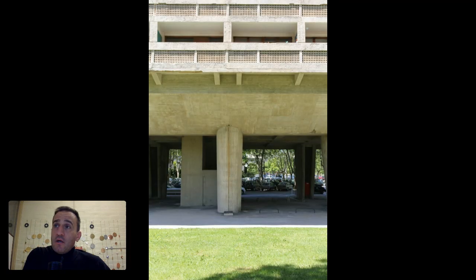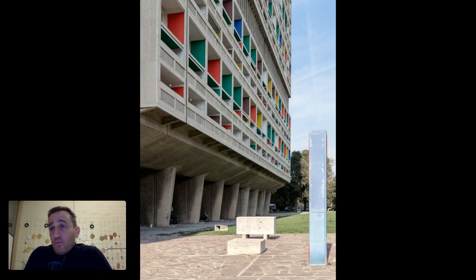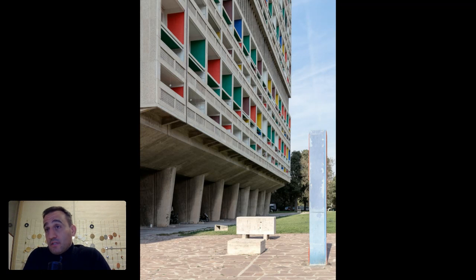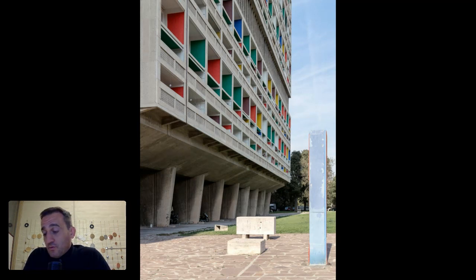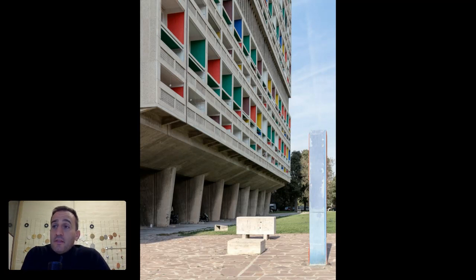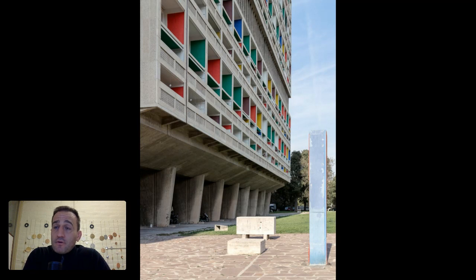Corb designs this thing, which is both an architectural project and an urban design project. In his own words, he designs a vertical garden city. The main idea with Unité is that everything happens in this building for the residents: you can shop in this building — there are markets, shops, gift shops, places for laundry, places to purchase clothing. So you can do your daily shopping, live, and play in this building.